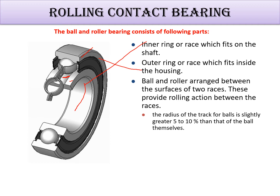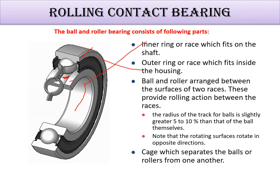The radius of the track for the ball is slightly greater — 5 to 10 percent — than that of the balls themselves. The rotating surface moves in the opposite direction. The cage separates the balls or rollers from one another. This casing avoids external material from entering the bearing, since ball bearing finishing is at a very high level.